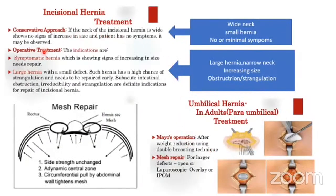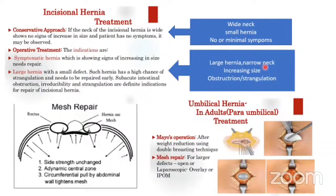Conservative treatment for incisional hernia is appropriate when the neck of the hernia is wide and the hernia is small, so the strangulation risk is very small, and when there are no or minimal symptoms. Encourage exercise, diet, strengthening exercises, and wearing of an abdominal belt. Surgery is indicated when the risk of strangulation is high, as in large hernias with a narrow neck, rapidly increasing size, or signs of obstruction and strangulation.